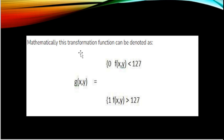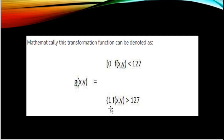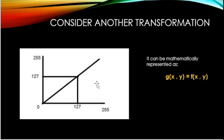Mathematically, the transformation function can be represented as: g(x,y) equals 0 if the intensity value is less than 127, and g(x,y) equals 1 (white) if the intensity value is greater than 127. Using these equations, we decide whether the image is black or white after transformation.